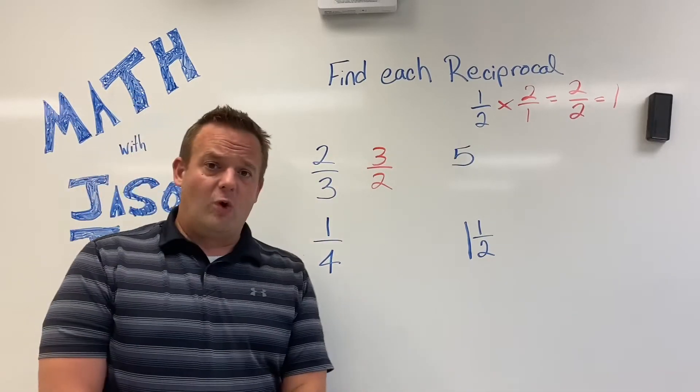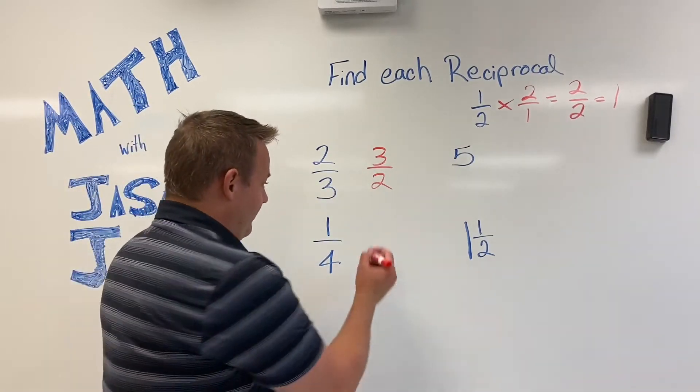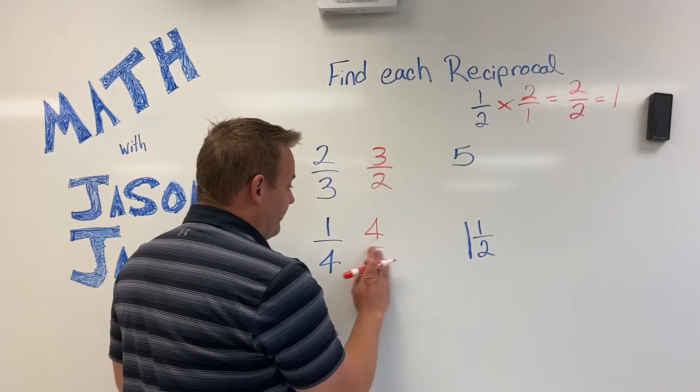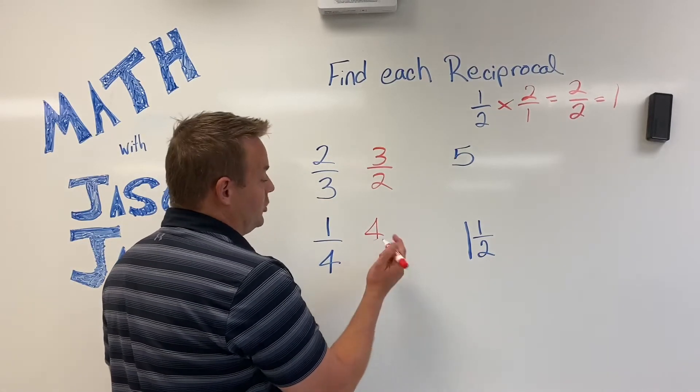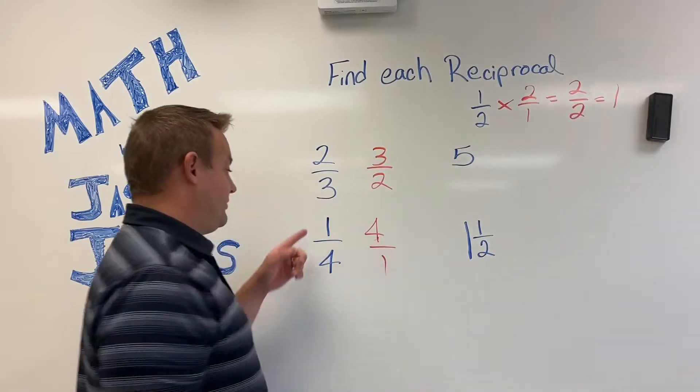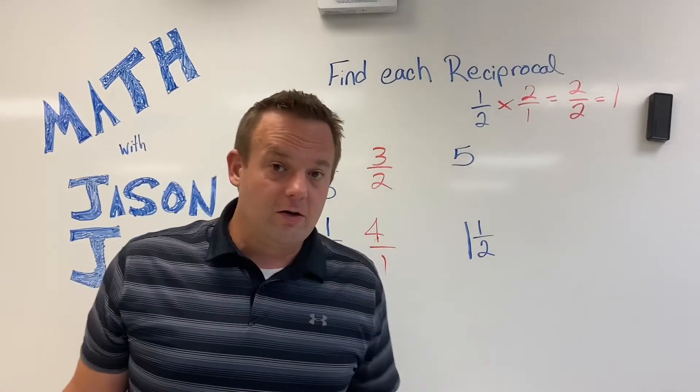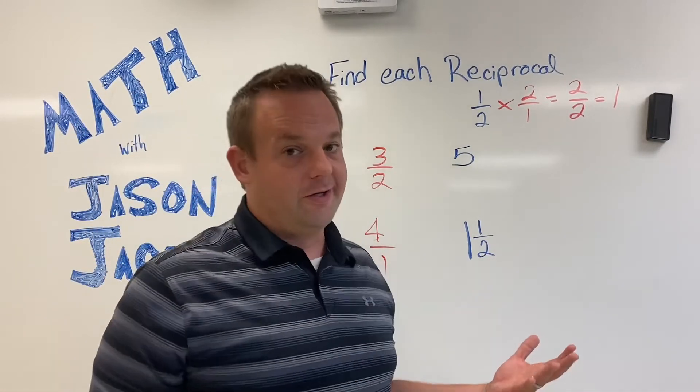What's the reciprocal of one fourth? Well, four over one, or just four, because four is assumed four over one. So, the reciprocal of one fourth is four, or four over one is still accurate.